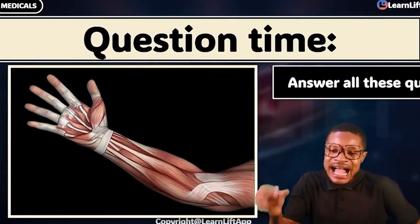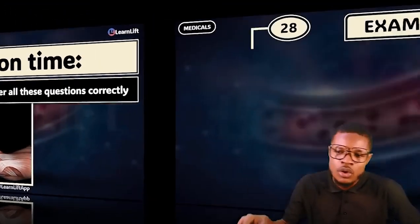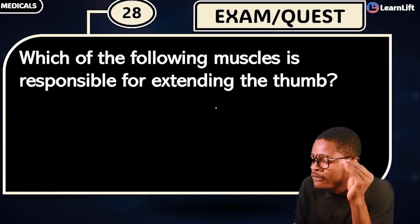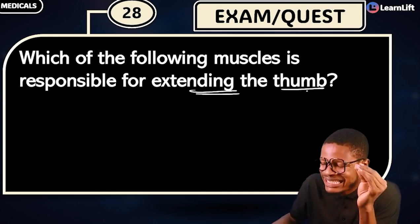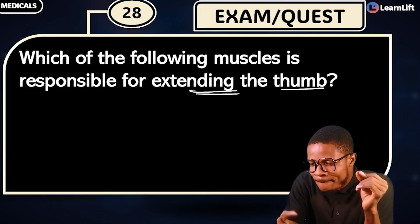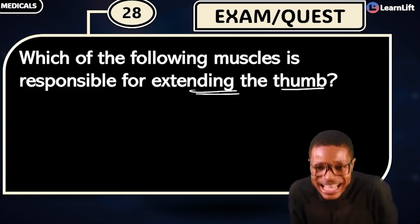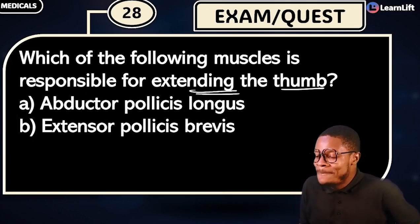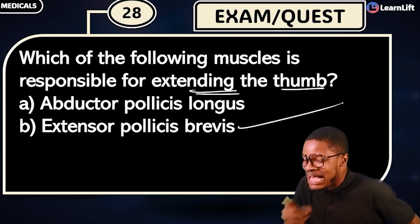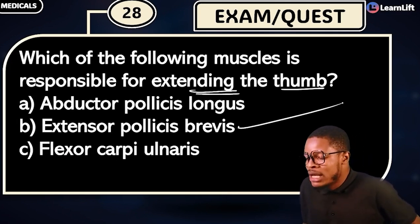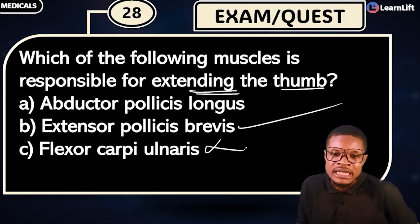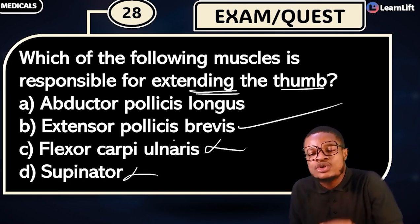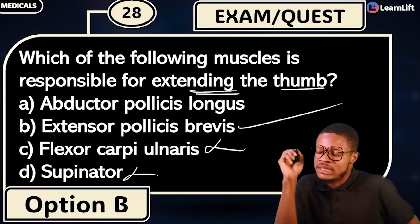Question time — question 38: Which of the following muscles is responsible for extending the thumb? Option A: abductor pollicis longus. Option B: extensor pollicis brevis. Option C: flexor carpi ulnaris. Option D: supinator. The answer is option B — extensor pollicis brevis.